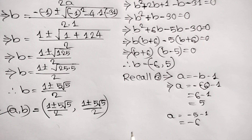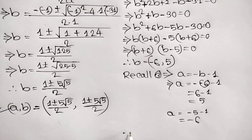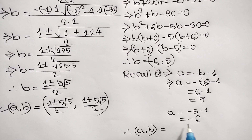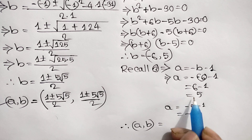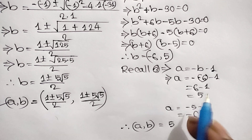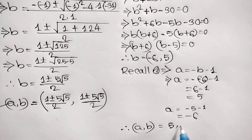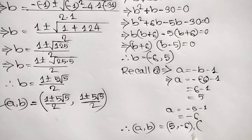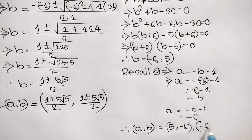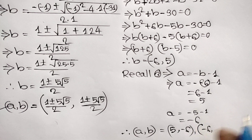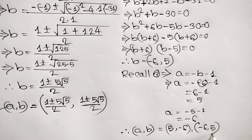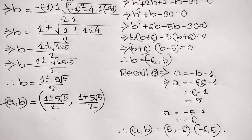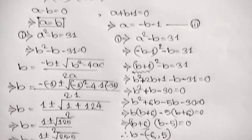So our final answer for the second solution: when A equals 5, B equals negative 6, and when A equals negative 6, B equals 5. This is our final answer. If you like this video, please subscribe to my channel, and see you in the next video.